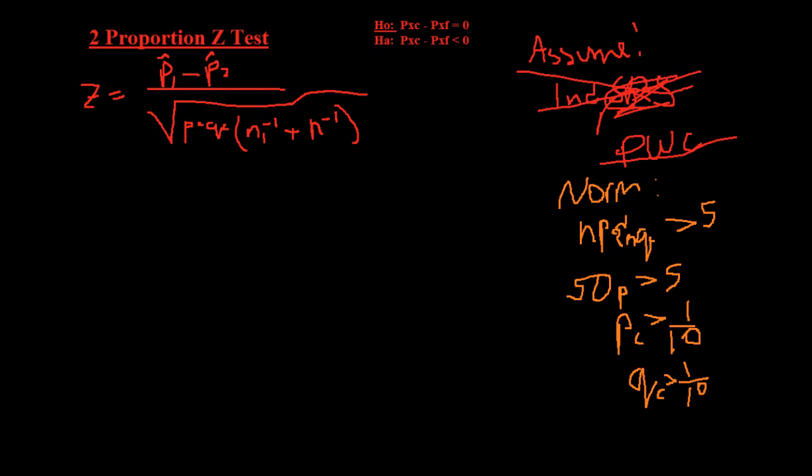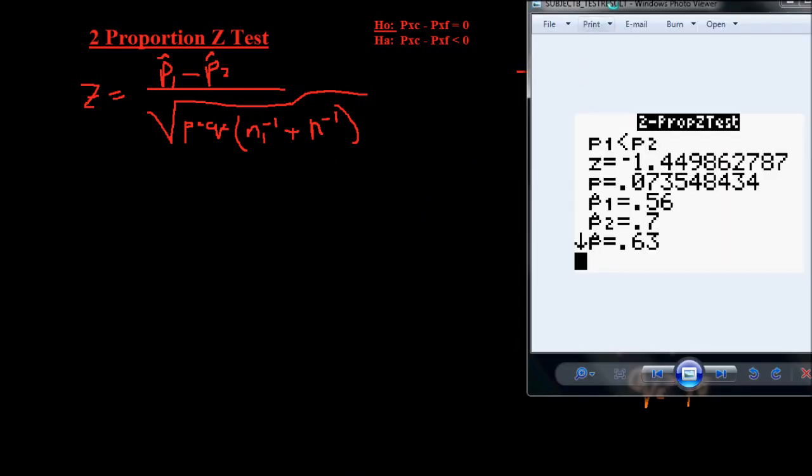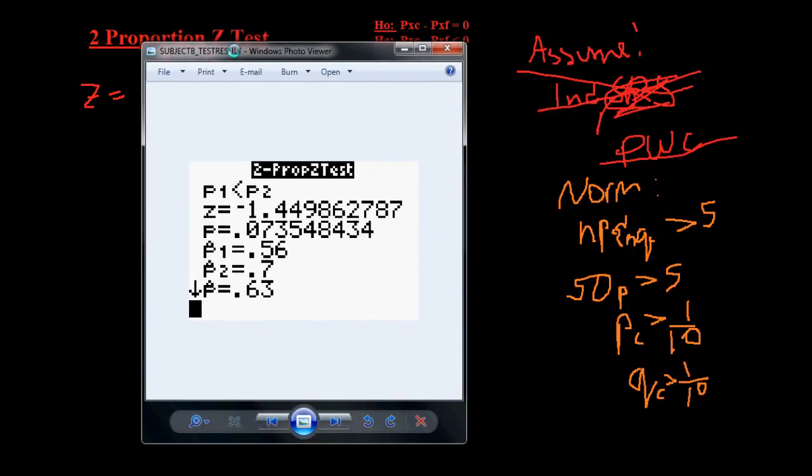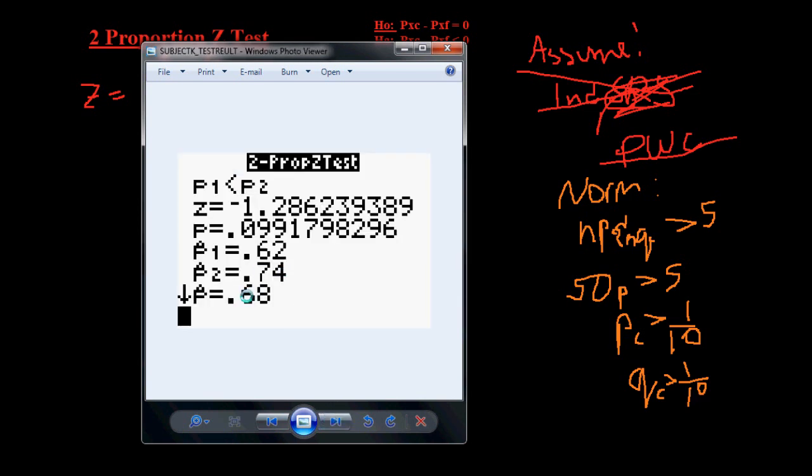Let me bring up the data. So this is for subject b right here. p combined is 0.63. That'll be bigger than a tenth. So 1 minus that. And then p combined for this one is 0.68. And that checks out. So we're all good. Now we can proceed with the test.